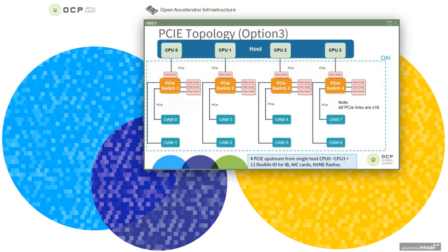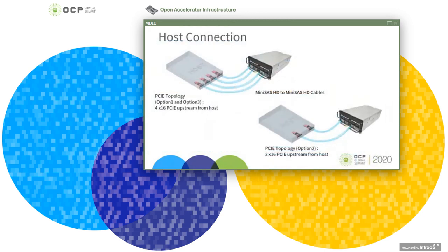Topology 3 is very similar to topology 1. The major difference is 4 PCIe x16 root ports from 4 host CPUs in this topology, versus only two CPUs in topology 1. The host and OAI system connection uses MiniSAS HD cables to connect host retimer cards to bridge boards inside the OAI system — four pairs in topology 1 and 3, and two pairs in topology 2. Topology 2 is the configuration used for the AI training workload live demo, viewable from the virtual OAI experience lab.